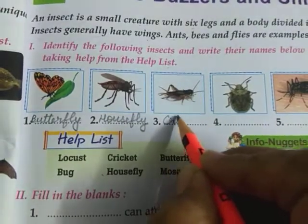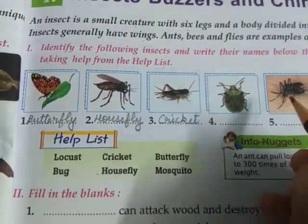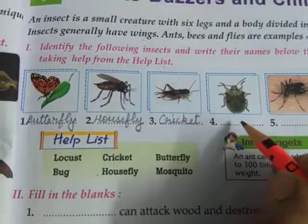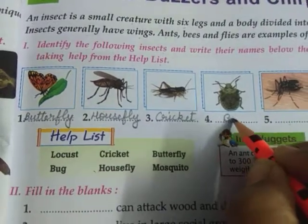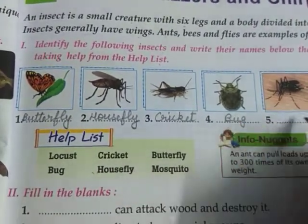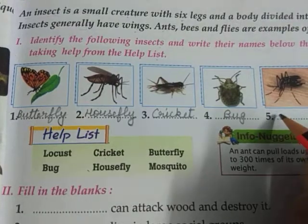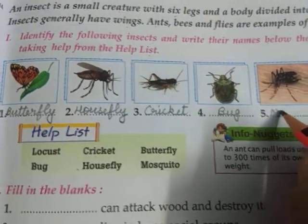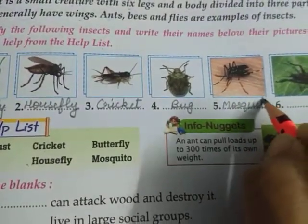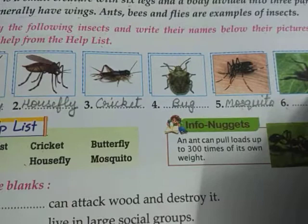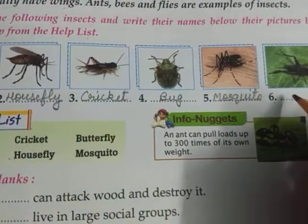The third one is cricket — the insect that makes sound at night. Then bug. And mosquito.